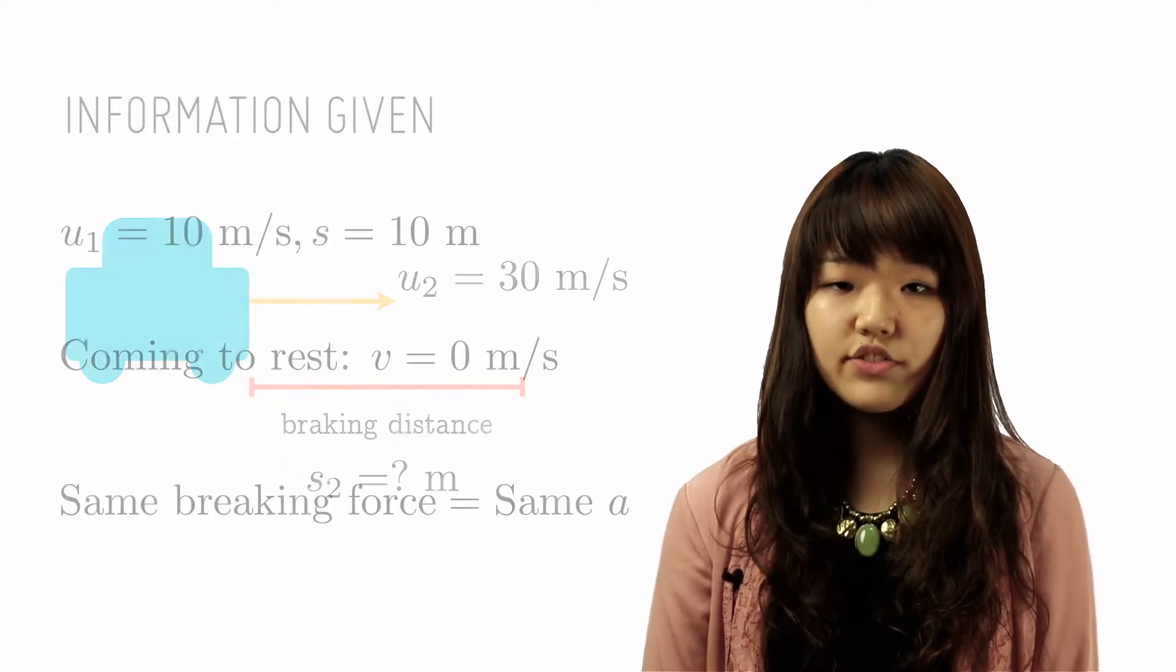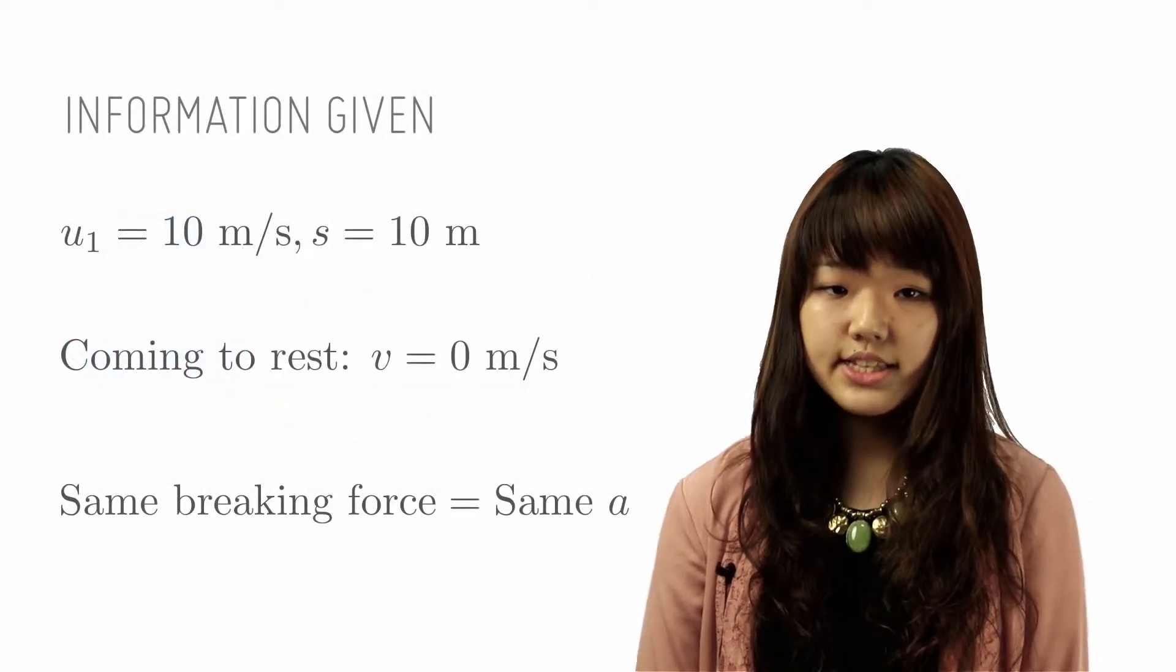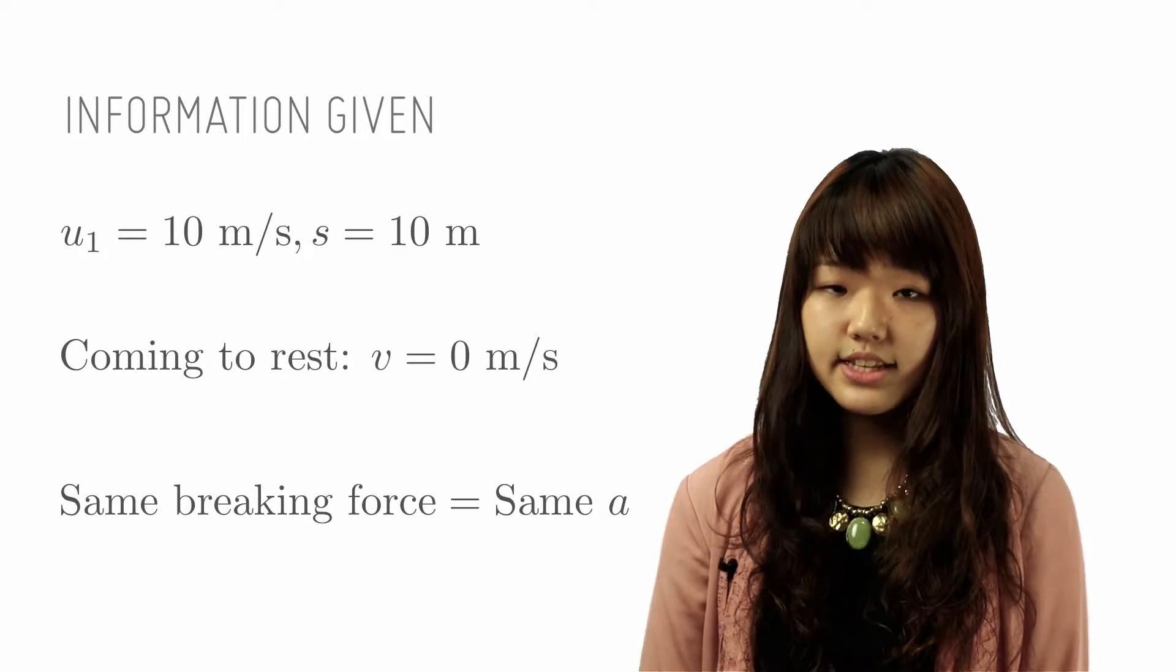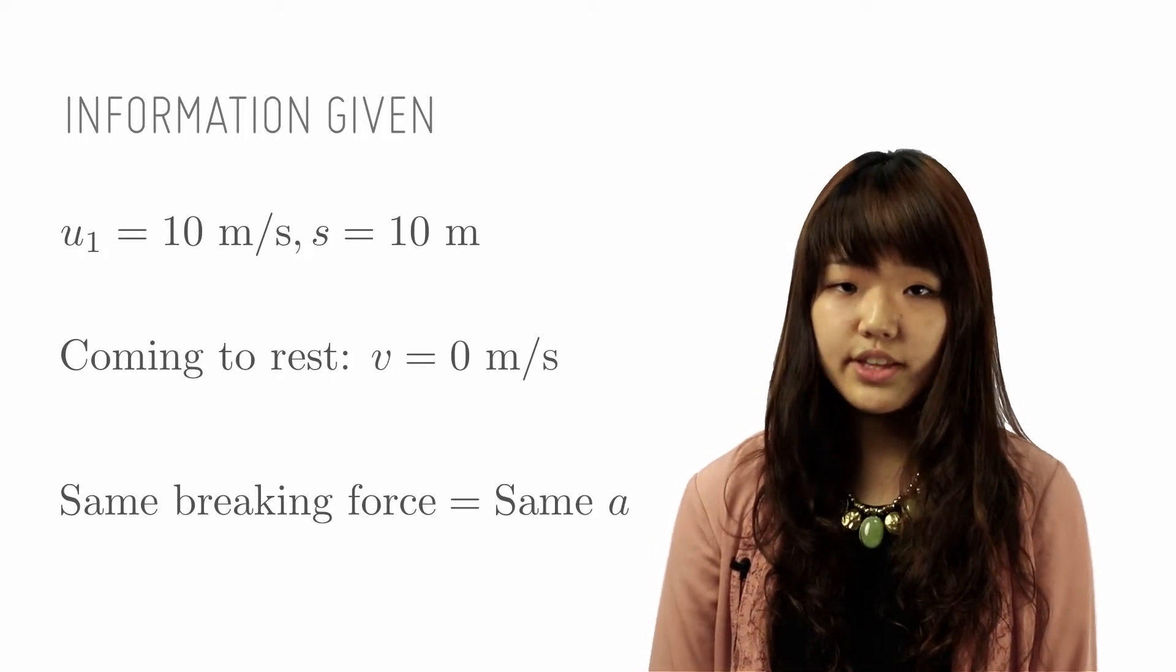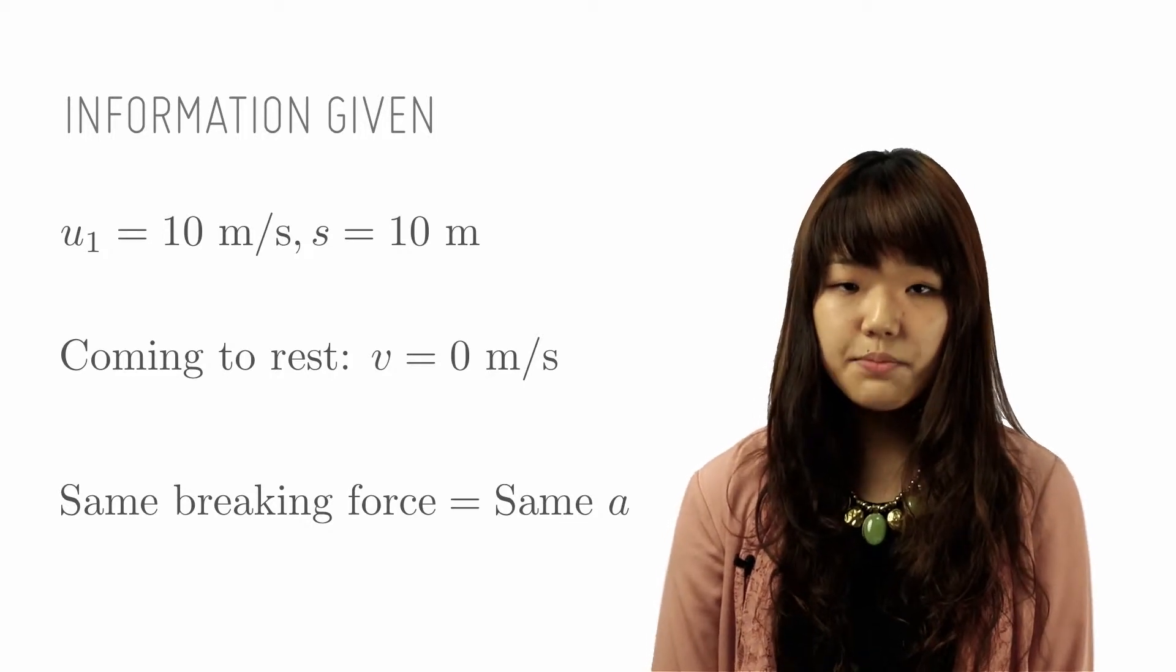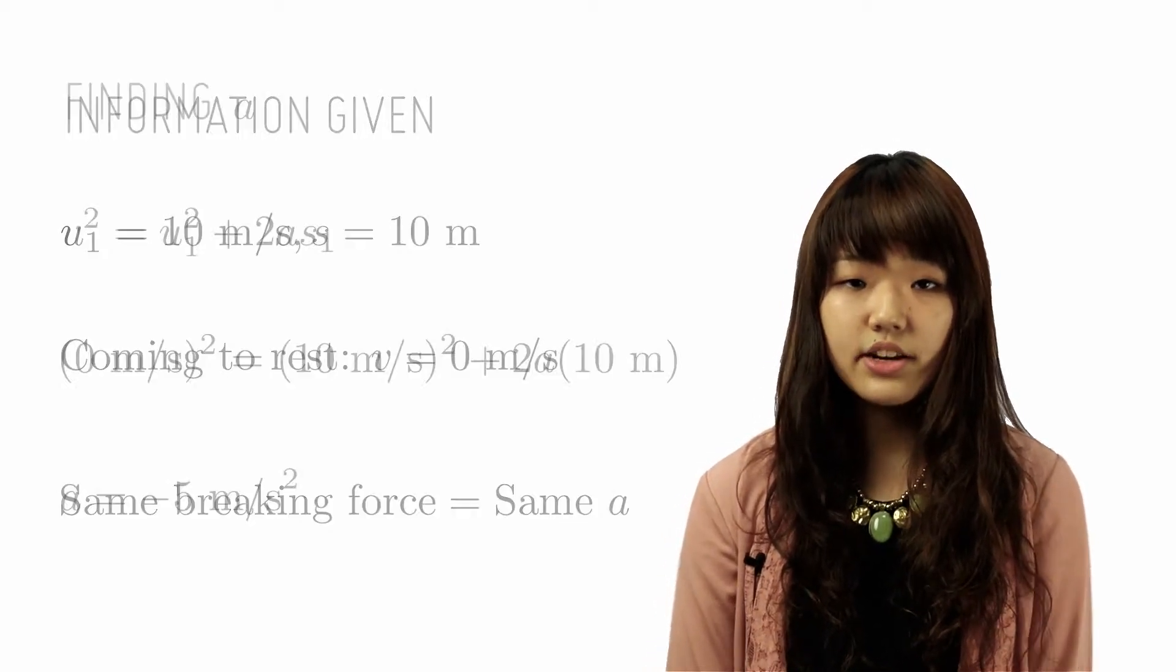First we write down all the information we have. U₁ is 10 m/s, the braking distance S is 10 m, and when it comes to rest we can conclude that V equals 0 m/s. Same braking force implies there is the same acceleration.